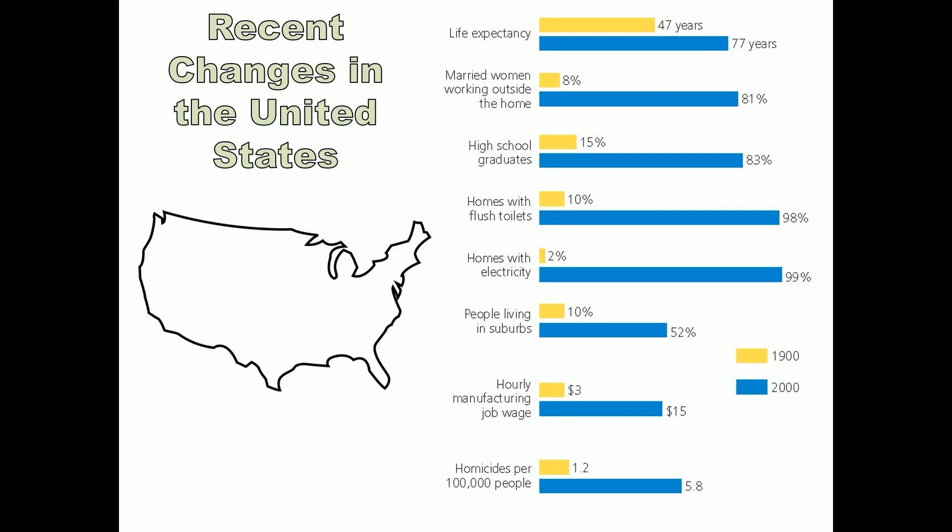Hourly wage for a manufacturing job went from $3 to $15. Homicides per 100,000 people went from 1.2 in 1900 to 5.8. I suspect this is strongly tied to increasing population density — more people clustered together means more person-to-person interactions daily, which likely increases crime rates, whereas a more spread-out population would have a lower overall crime rate — though I'm not an expert on that.